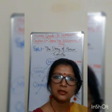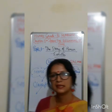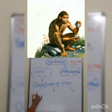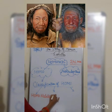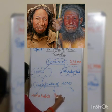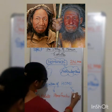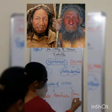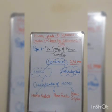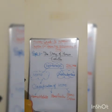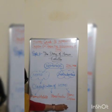After understanding the differences between australopithecus and homo, it is now time to understand the classification of homo. Homo are further divided into three categories. Let us see what those are — homo habilis, homo erectus, and homo sapiens.